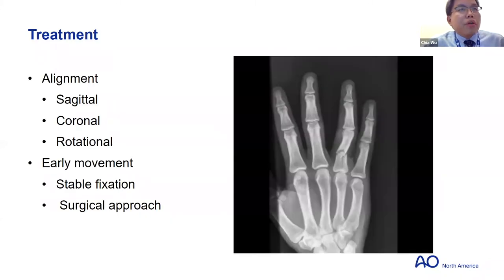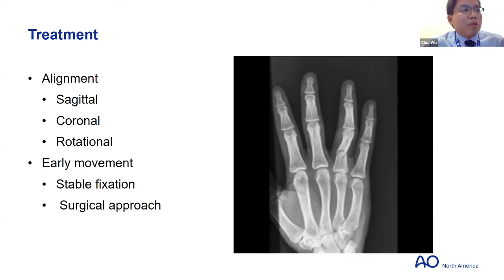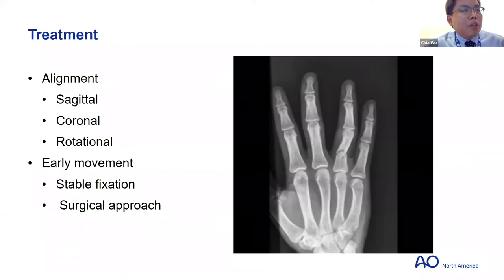Treatment, especially for extra-articular fractures, is based on alignment and early movement. You want to check alignment in the sagittal, coronal, and rotational planes — all your treatment is based on restoring that, depending on whether you think the fracture is stable. Early movement is always important in the finger to prevent stiffness. Your fixation strategy must allow for early movement with enough stability, and your surgical approach should minimize soft tissue trauma to limit post-op swelling and pain.